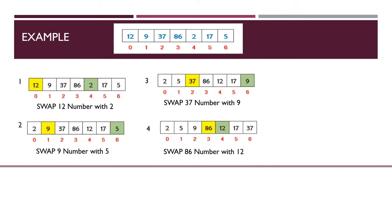Now find the fourth smallest number stored in the array between index 3 and 6. The fourth smallest number is 12. Check if the number at index 3 is greater than the fourth smallest number at index 4. If so, swap the numbers — we can see that 86 swaps with 12.